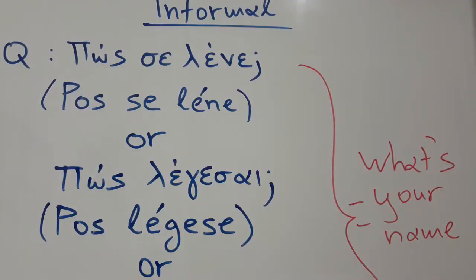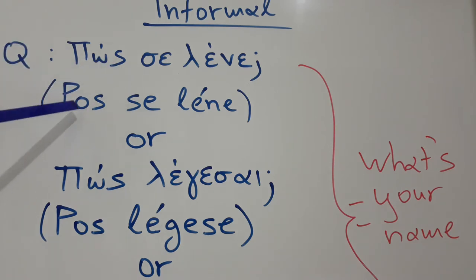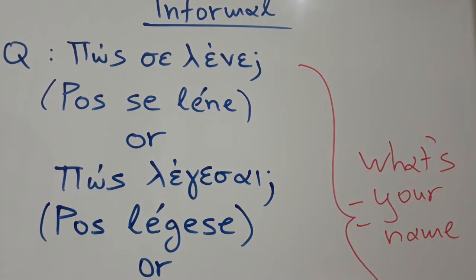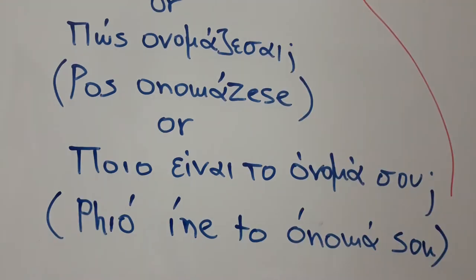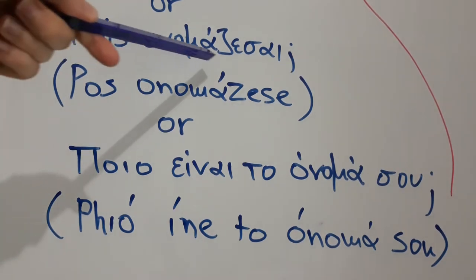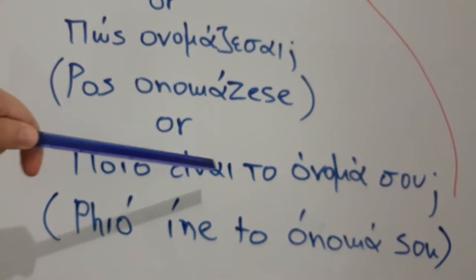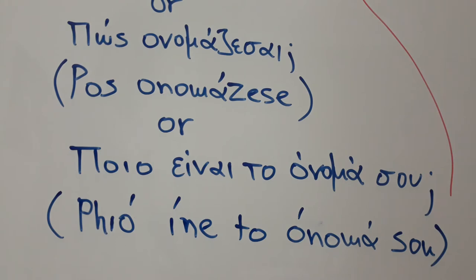Let's look at the questions that someone can ask you to introduce yourself in an informal situation. The first question is πώς σε λένε — what is your name? The second, πώς λέγεσαι. The third question is πώς ονομάζεσαι. And the fourth, ποιο είναι το όνομά σου. All these questions have the same meaning — they mean what's your name.